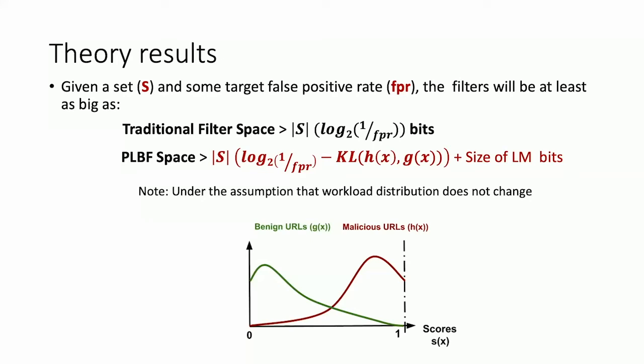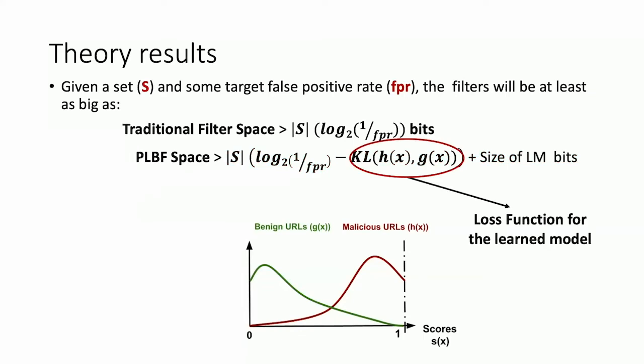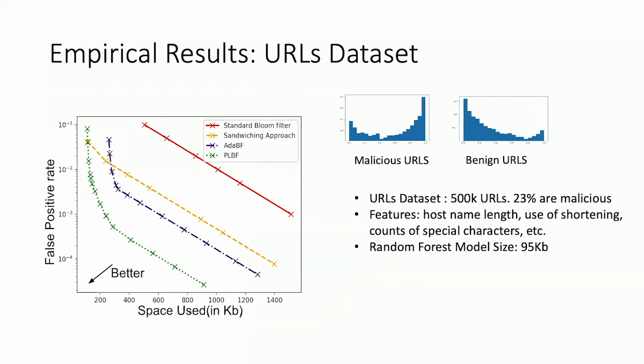The KL divergence appearing — that's an information-theoretic quantity — sort of magically popping out of the optimization gave us confidence we were doing the right thing. It also gives us a way to talk to machine learning people: whatever learning algorithm you're using, it would be really great if you could maximize the KL divergence between these distributions. That's feedback we can give the ML community — this is the loss function for your model.